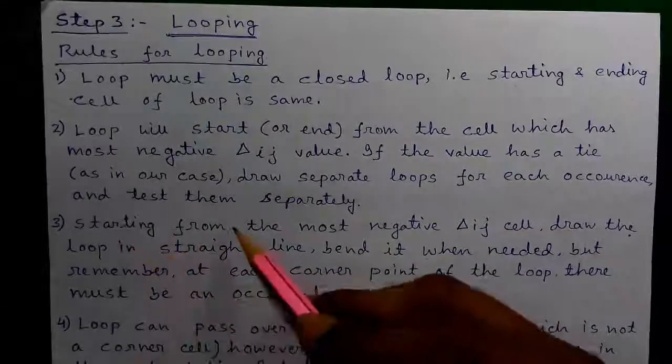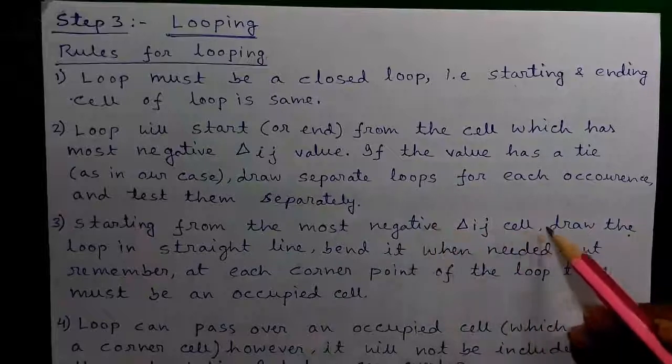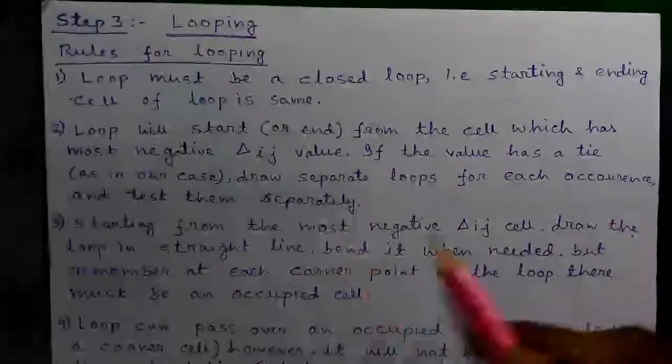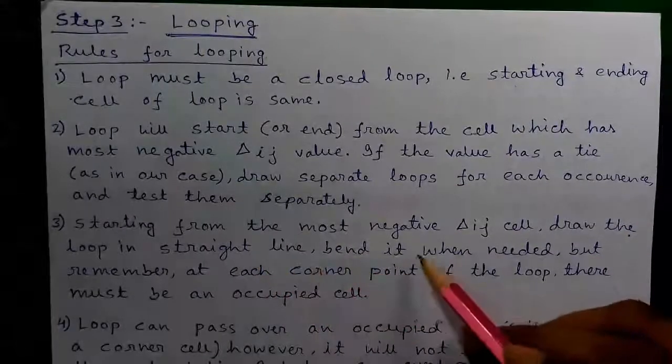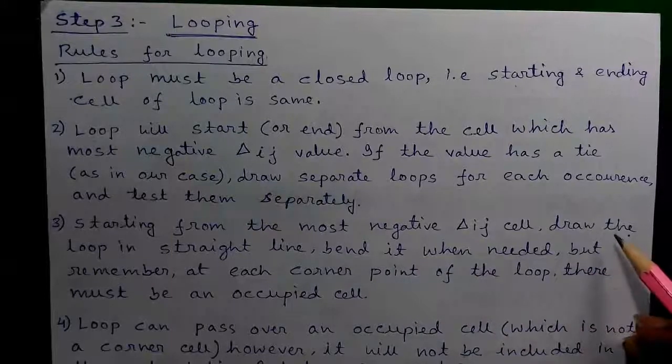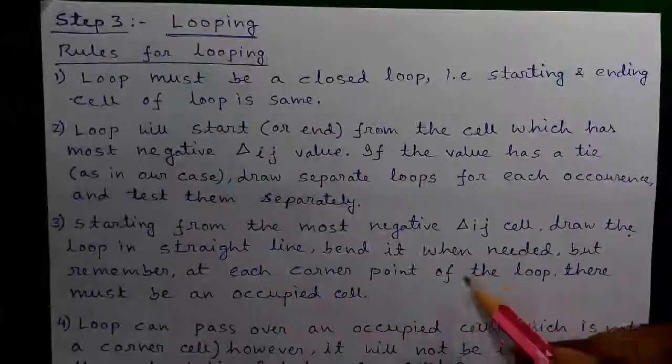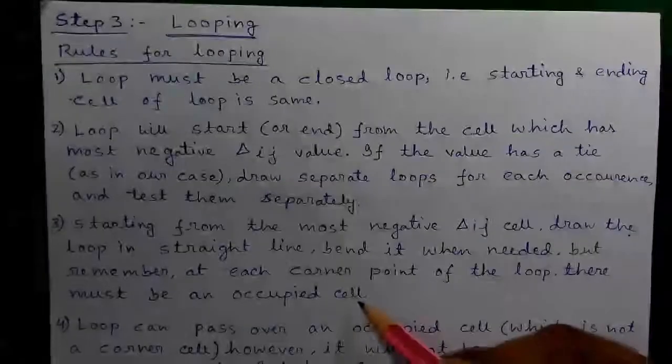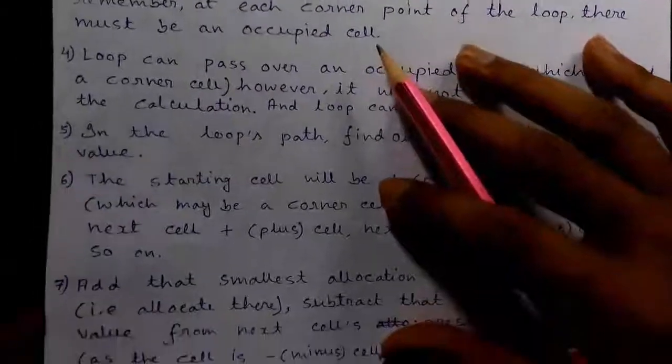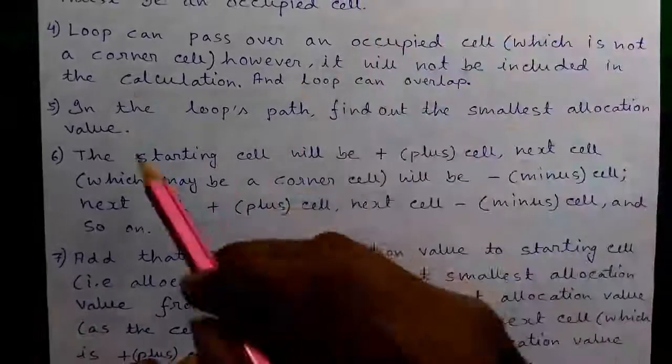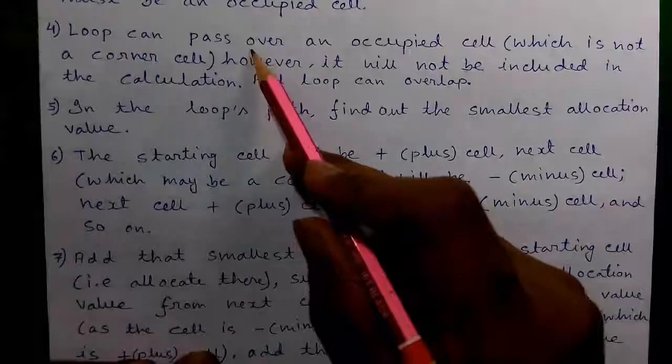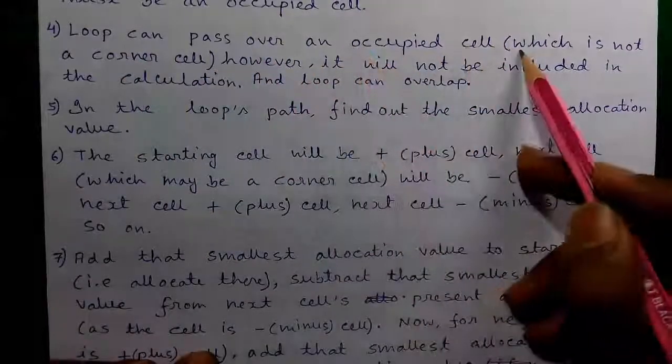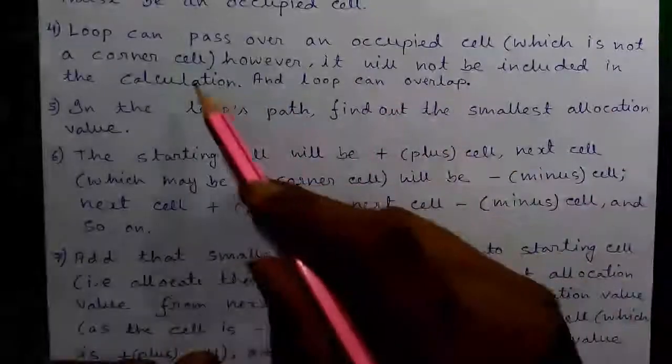Rule 3 - Starting from the most negative del IJ cell, draw the loop using straight lines and bend it when needed. But remember at each corner point of the loop there must be an occupied cell.